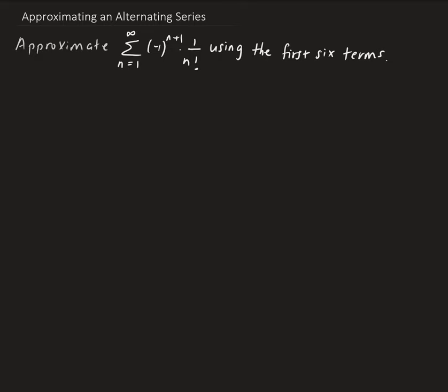We can do this by using the idea of the remainder term. Recall that for alternating series, we have that the actual series minus the nth partial sum is less than or equal to the nth plus one term.